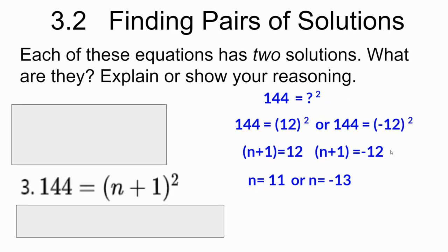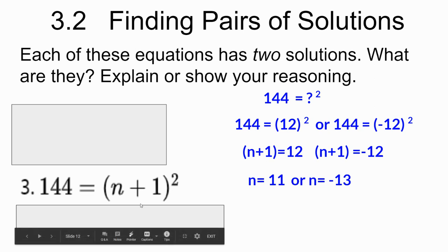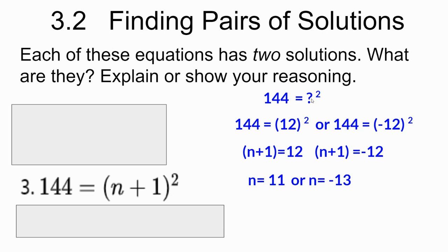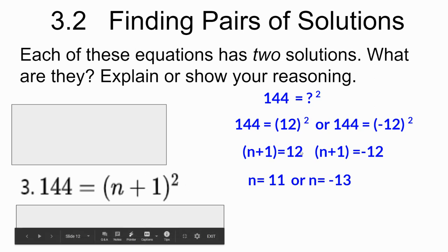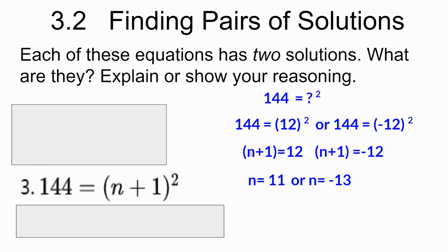Number three: 144 is equal to something squared. Notice they had n plus 1, and I took that whole expression — that whole binomial — and replaced it with a question mark. Something squared gives me 144. Well, 12 squared gives me 144, and I don't want to forget about the negative also. If I square negative 12, it also gives me 144. Now I can say: if this quantity, n plus 1, has to equal 12 or negative 12, what value of n would get me 12? What number plus 1 gives me 12? That's 11. And what number plus 1 gives me negative 12? I need a bigger negative — so my two solutions are 11 and negative 13.